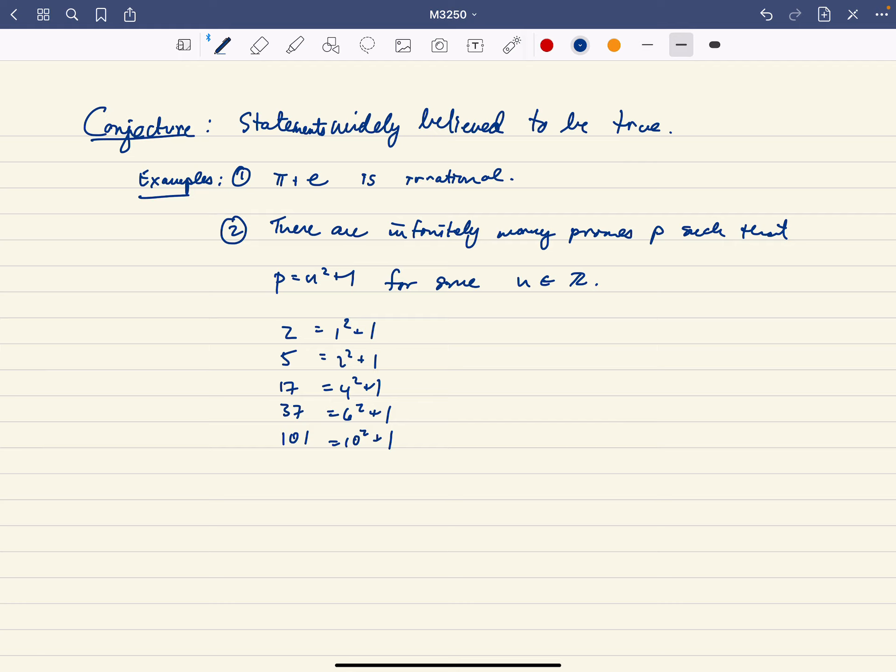So you can rule out some of these being primes, but there's a conjecture that this list of primes, if you look at n² + 1, there's infinitely many primes of that form.